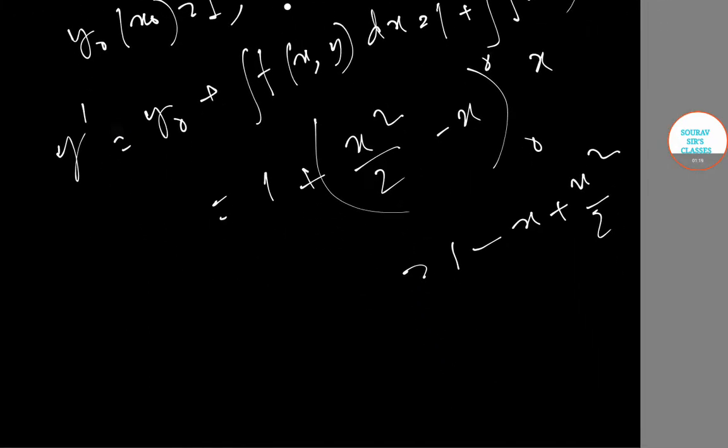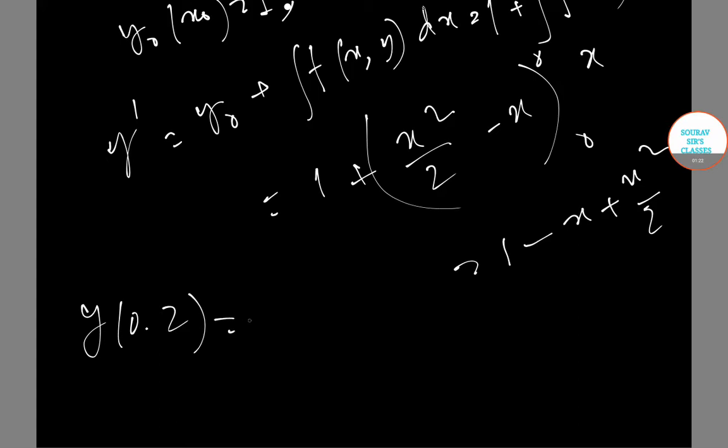Now, we have y(0.2) = 1 - 0.2 + 0.2²/2 = 0.82.